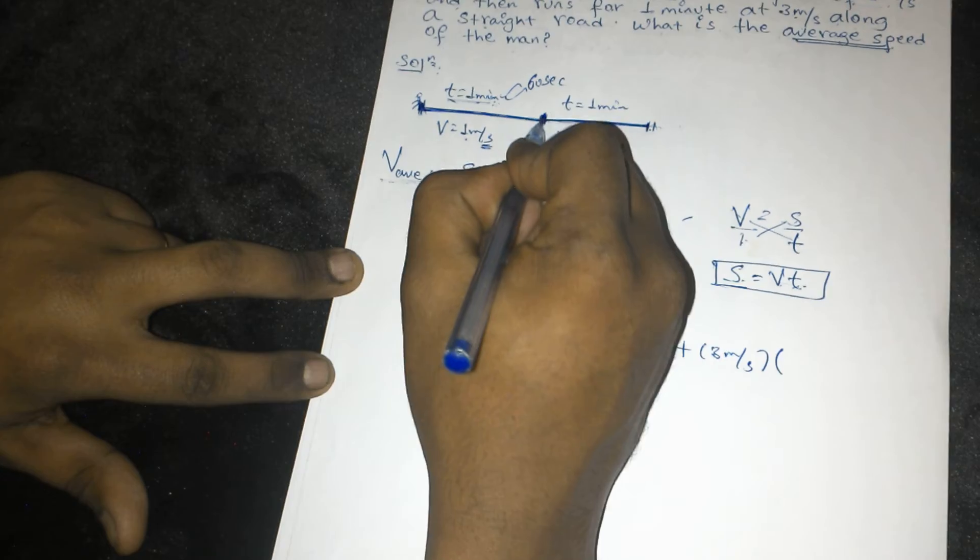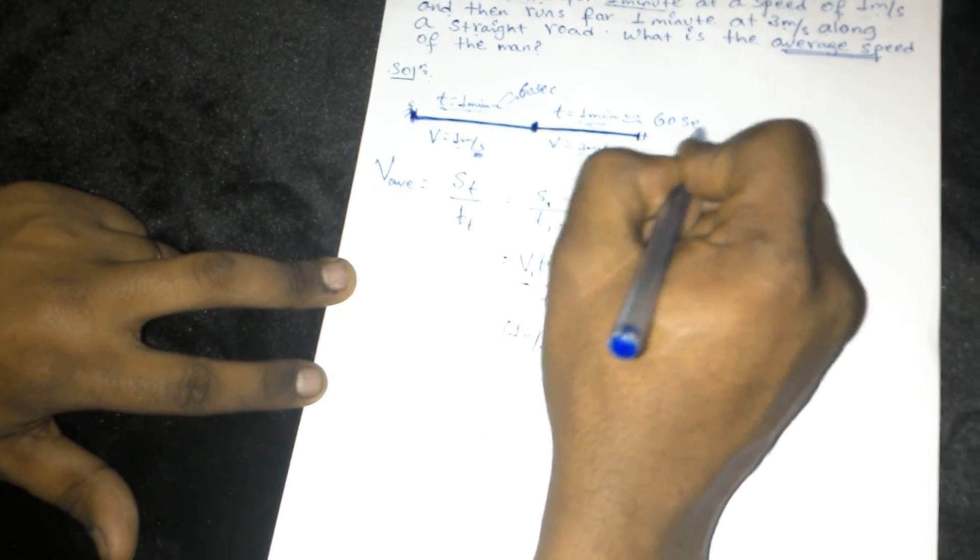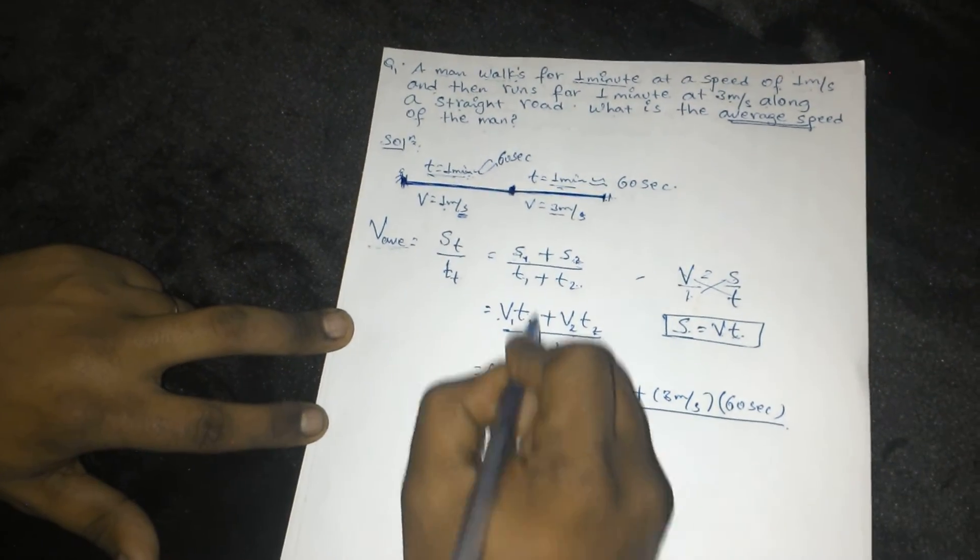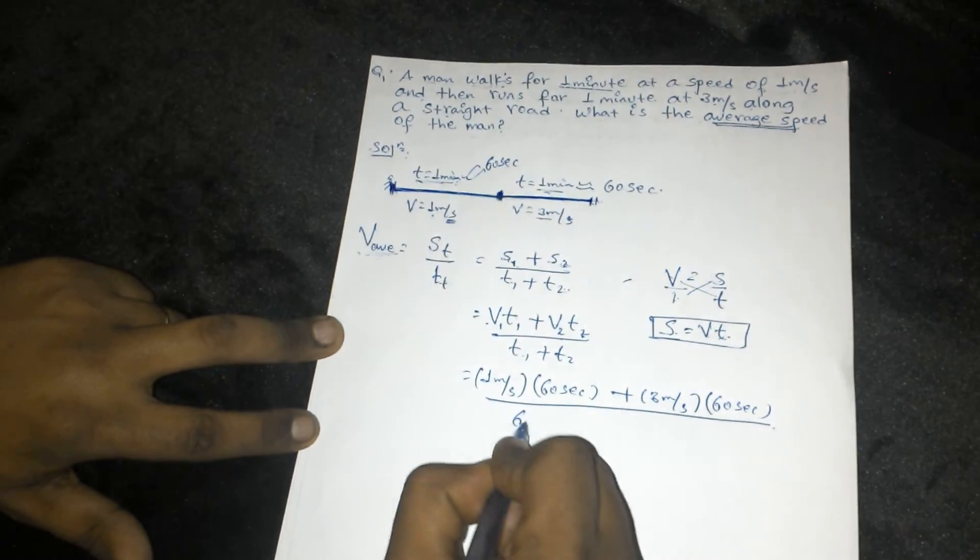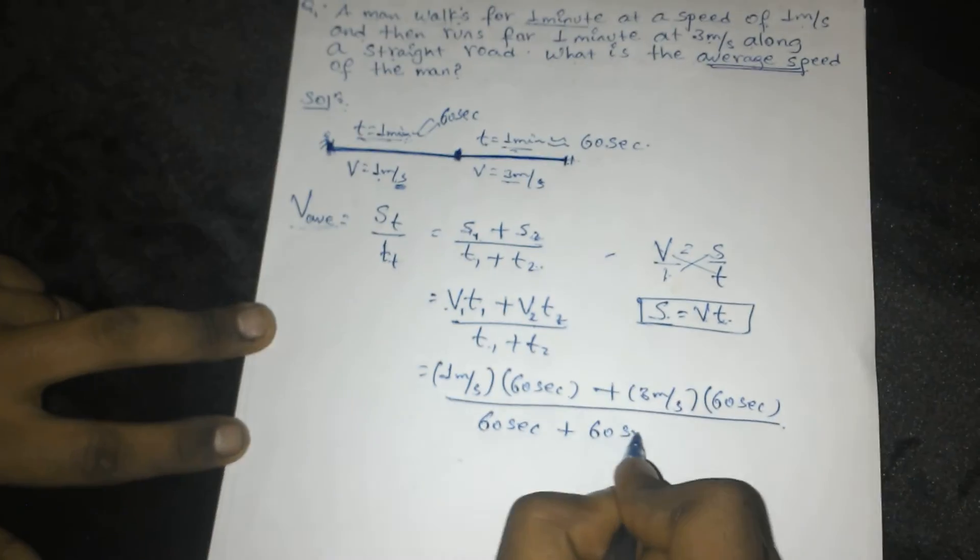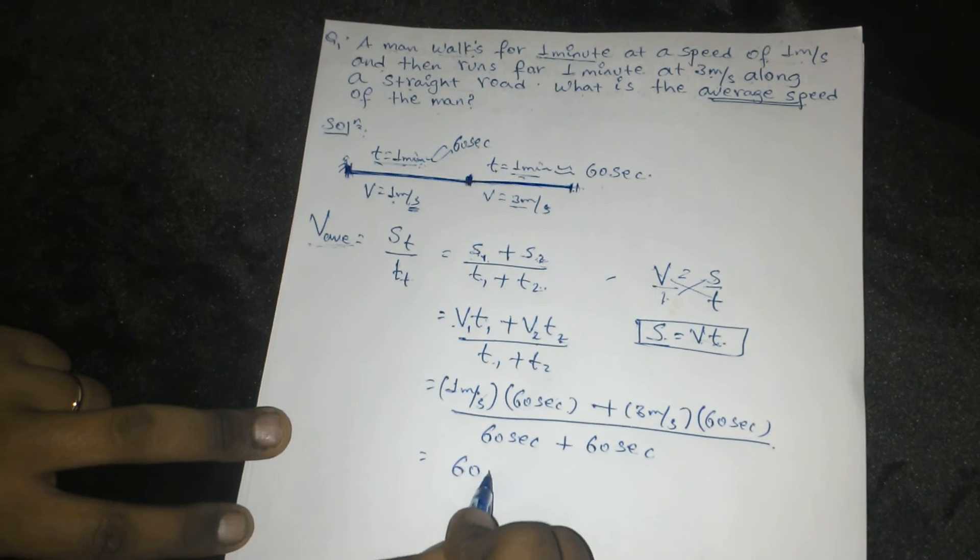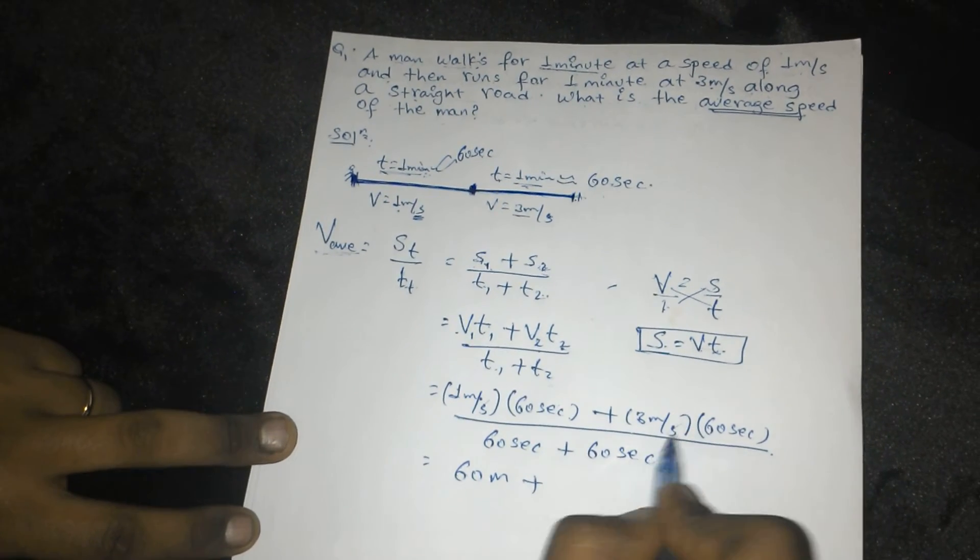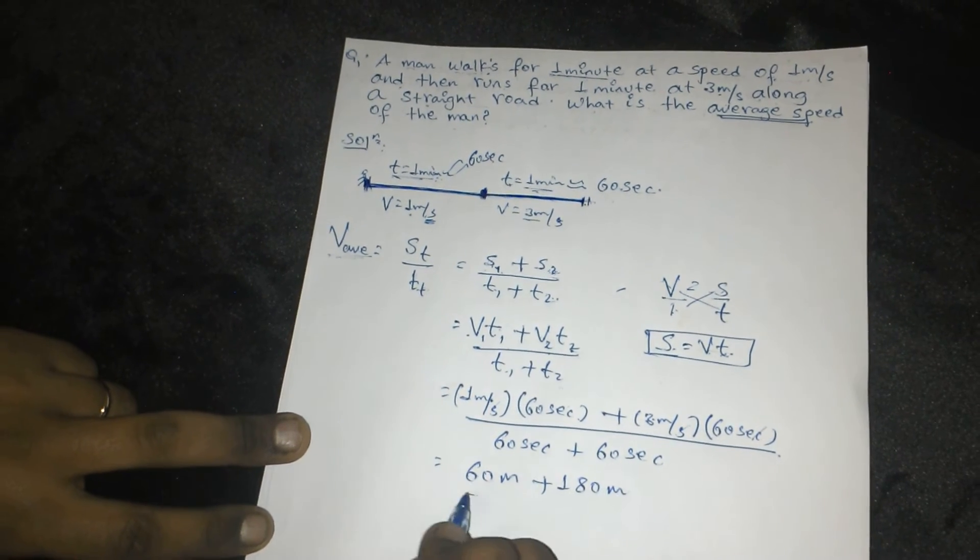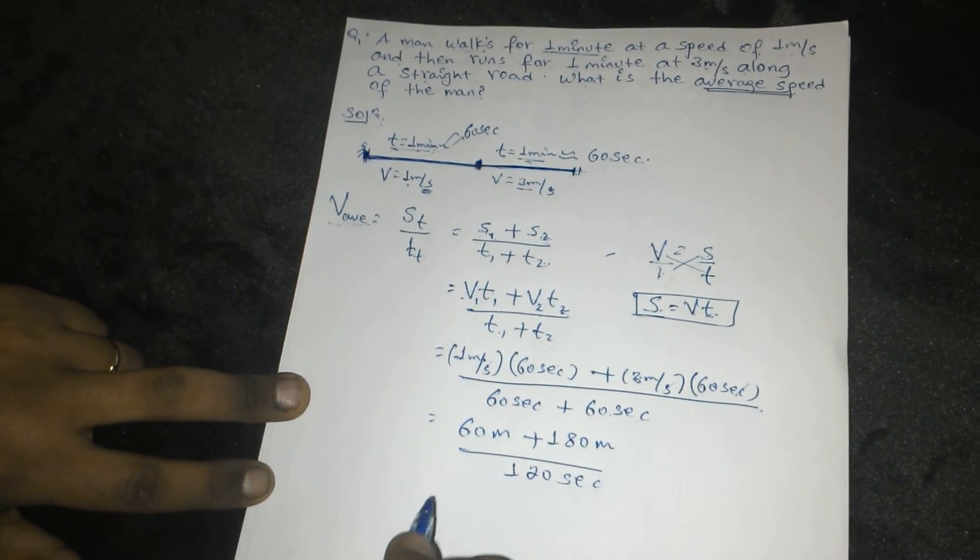We need to convert to the same units. Since meter per second, we need seconds. So 60 seconds for each minute. This gives us meters divided by seconds, so the units work out to meters per second.